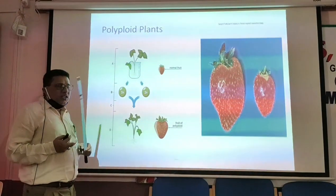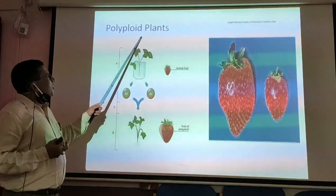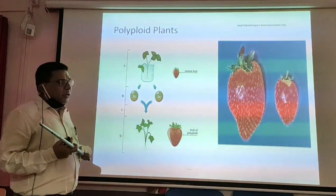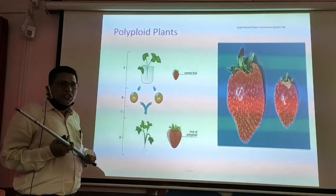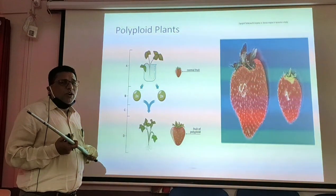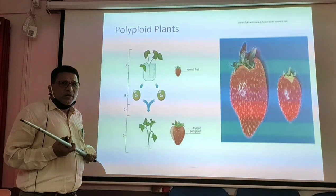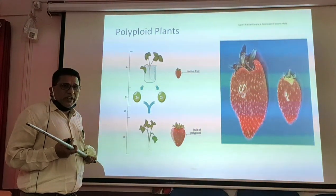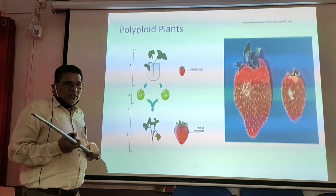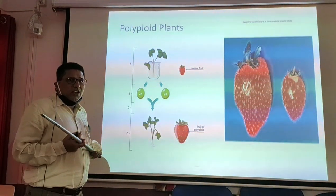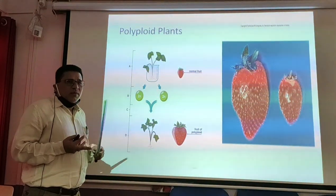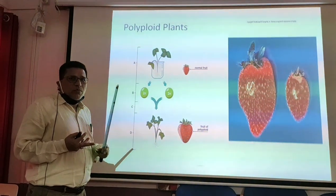Another application of plant tissue culture is the production of polyploid plants. Polyploid plants are plants which have more than two sets of chromosomes. They may be triploid, tetraploid, pentaploid, hexaploid, etc. The plants which have three sets of chromosomes are called triploid plants. The plants which have four sets of chromosomes are called tetraploid plants, and likewise pentaploid, hexaploid, and so on.